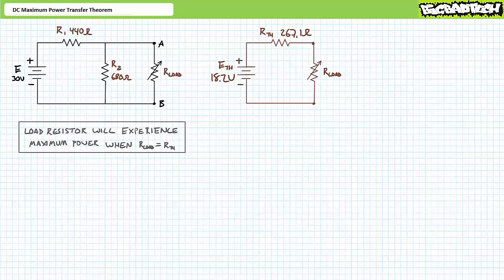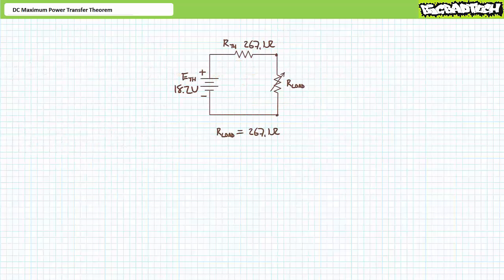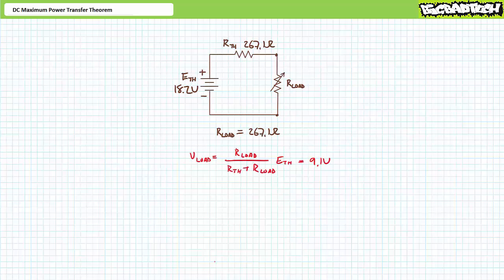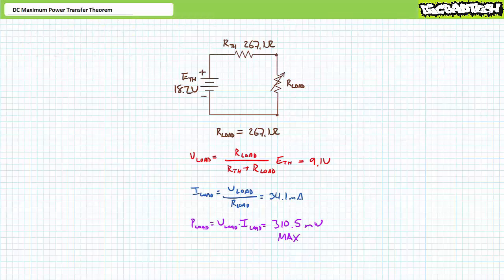Let's use this Thevenin's equivalent circuit to demonstrate the maximum power transfer theorem. The theorem states the load resistor will experience maximum power when its resistance is exactly equal to the Thevenin's equivalent resistance. When R-load is set to 267.1 ohms, the source sees a total resistance of exactly twice R-TH. The voltage divider rule shows the load drops half the supplied voltage: 9.1 volts. Current through the load is 34.1 milliamps, and it dissipates 310.5 milliwatts — the maximum power. Any other load value will dissipate less.